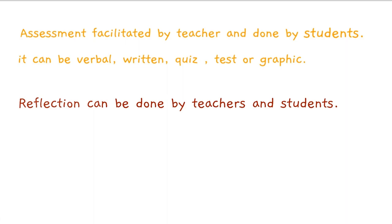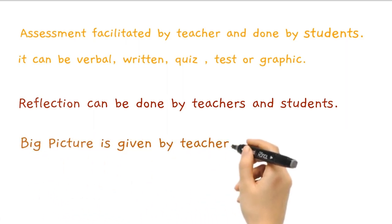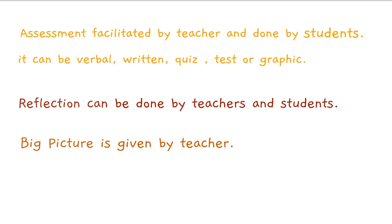Now let's talk about reflection. Reflection can come from both sides — both student and teacher reflect back on the lesson. The third thing is big picture: the teacher connects the child to the past lesson and the future lesson they are going to cover. When you do these three things, the lesson closure will be perfect.